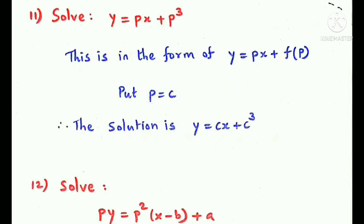Next question: solve y = px + p³. This is directly in Clairant's form, y = px + f(p). Putting p equal to c, the solution is y = cx + c³.